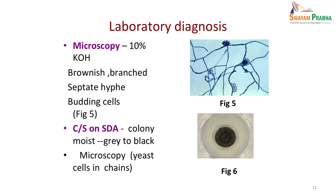On microscopy under 10% KOH, you will see brownish branched septate hyphae along with budding cells — a very typical appearance. When grown on Sabouraud dextrose agar, you get a brown to grey to black moist colony, and on Gram stain you see yeast cells in chains. With this kind of picture — brownish discolored patches with this microscopy and culture — we diagnose it as tinea nigra. Treatment is similar to tinea versicolor.